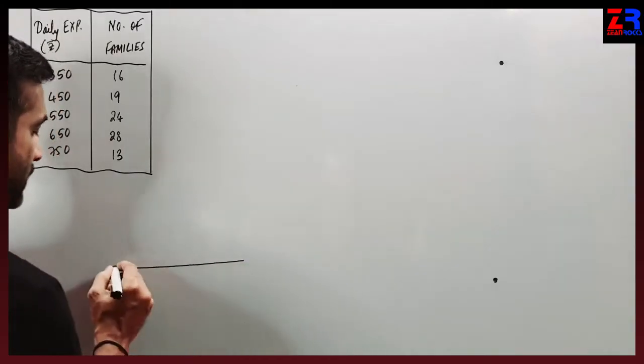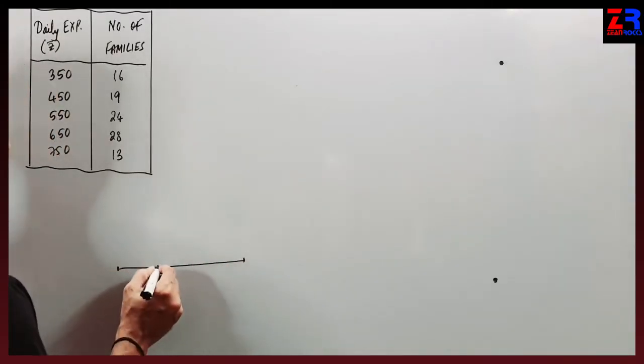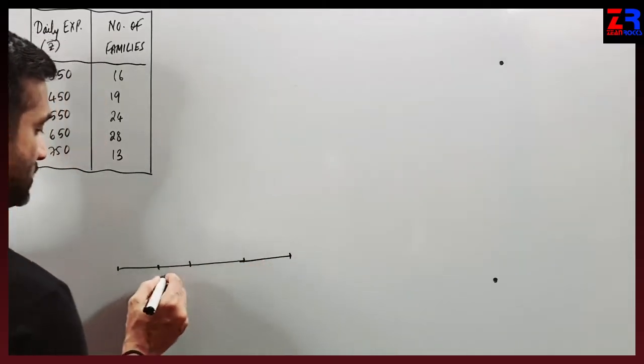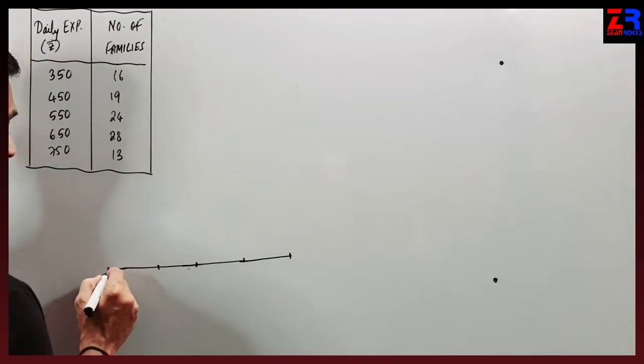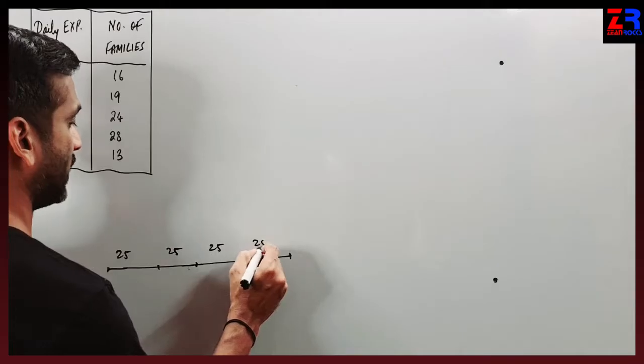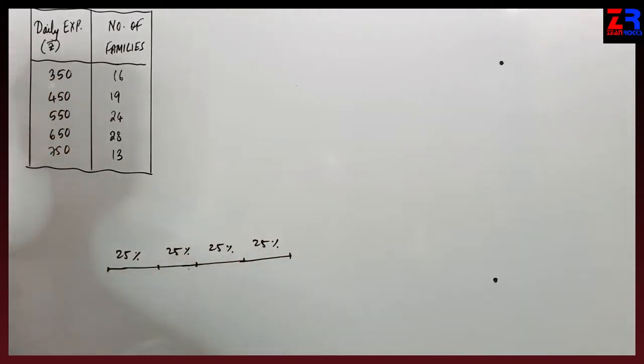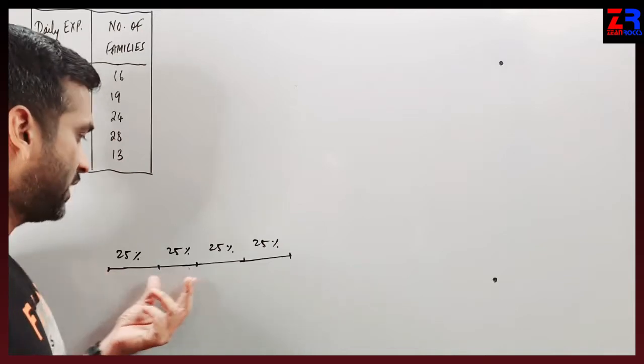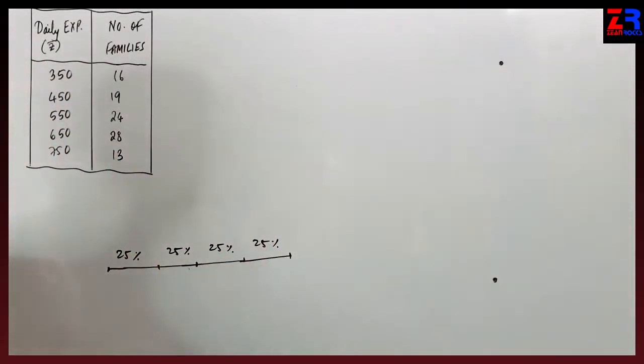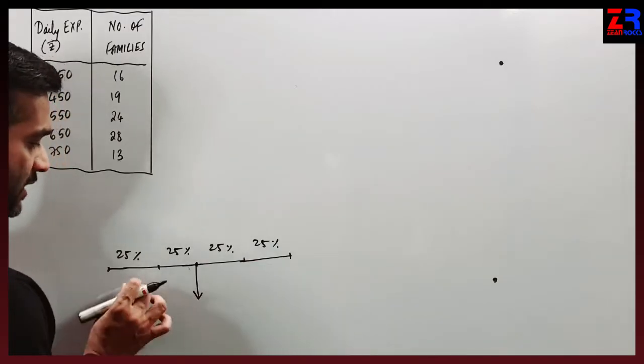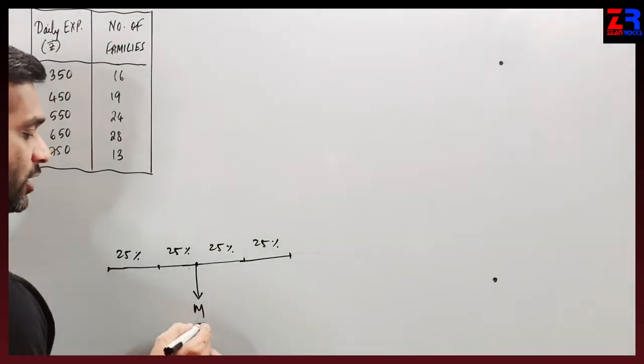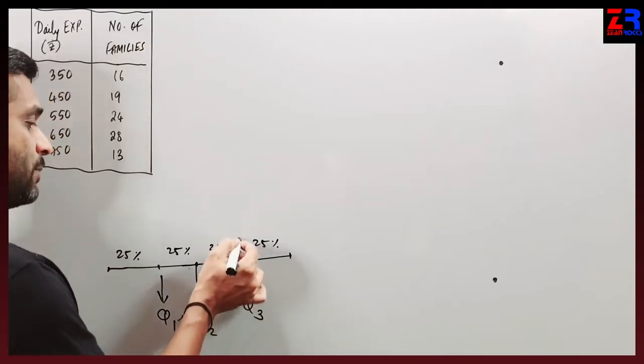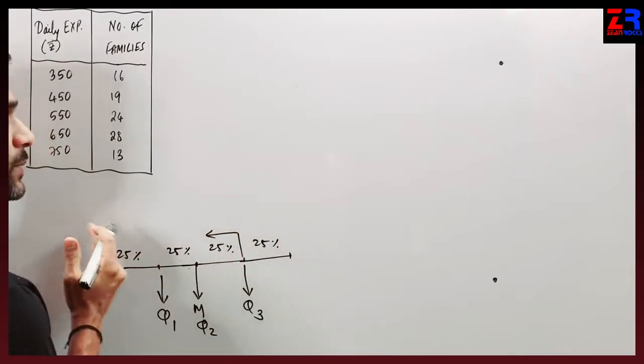Below which 75% - we have seen in the first lecture that the data is divided into 4 parts: 25%, 25%, 25%, 25%. When 50% data is there, the value is called median or quartile 2. This is quartile 1, this is quartile 3. So when we talk about 75% data, it is called quartile 3.